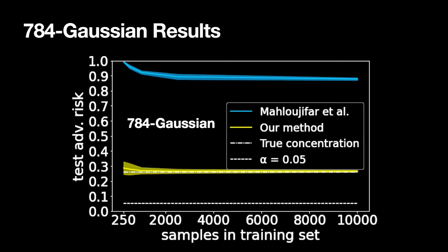Lastly, we assess the performance of our algorithm on a synthetic 784-dimensional Gaussian distribution, for which we are able to analytically derive the true concentration, represented here with the dash-dot line. We see that our algorithm approaches this true value very quickly, coming within 0.01 of the true concentration given only about 1,000 samples.